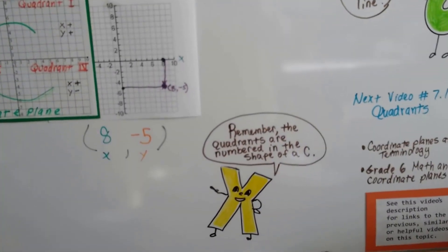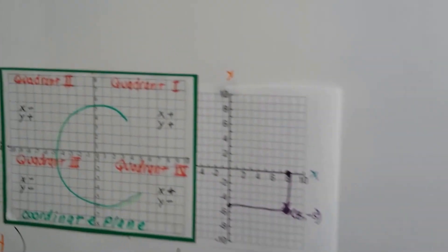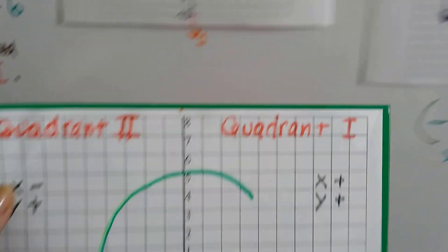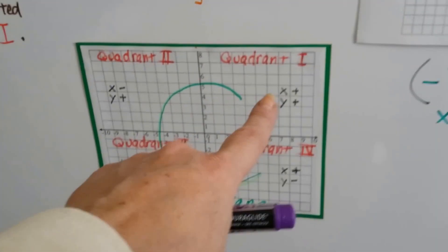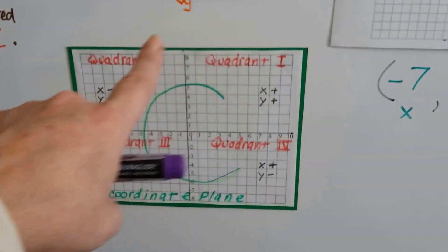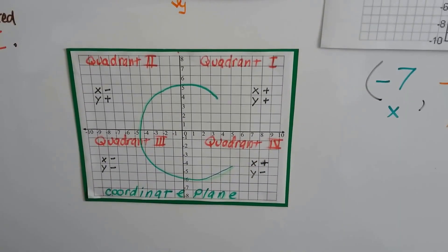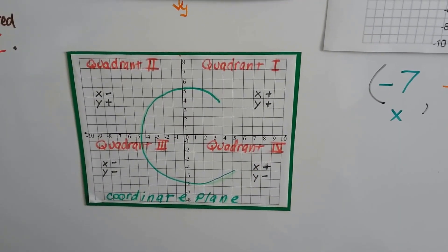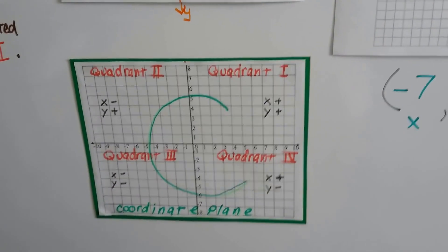If there's a 0 in the ordered pair, the point is going to be on one of the lines — on the line of the non-zero number. The non-zero number 8 in the first position means it's on the y; the non-zero number 8 in the second position means it's on the x. And remember, the quadrants are numbered in the shape of a C, going 1, 2, 3, 4. Those are the four quadrants of a coordinate plane.